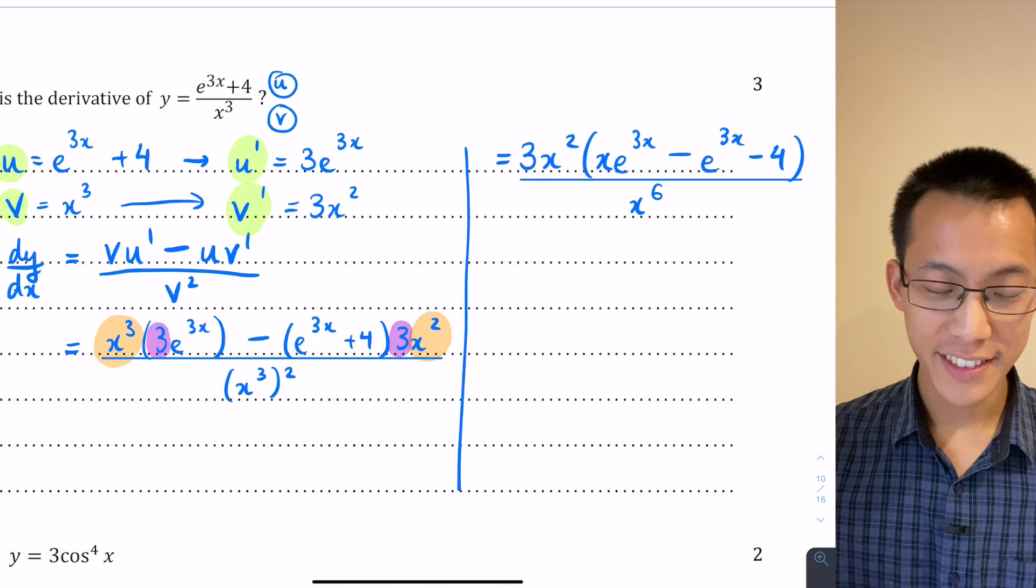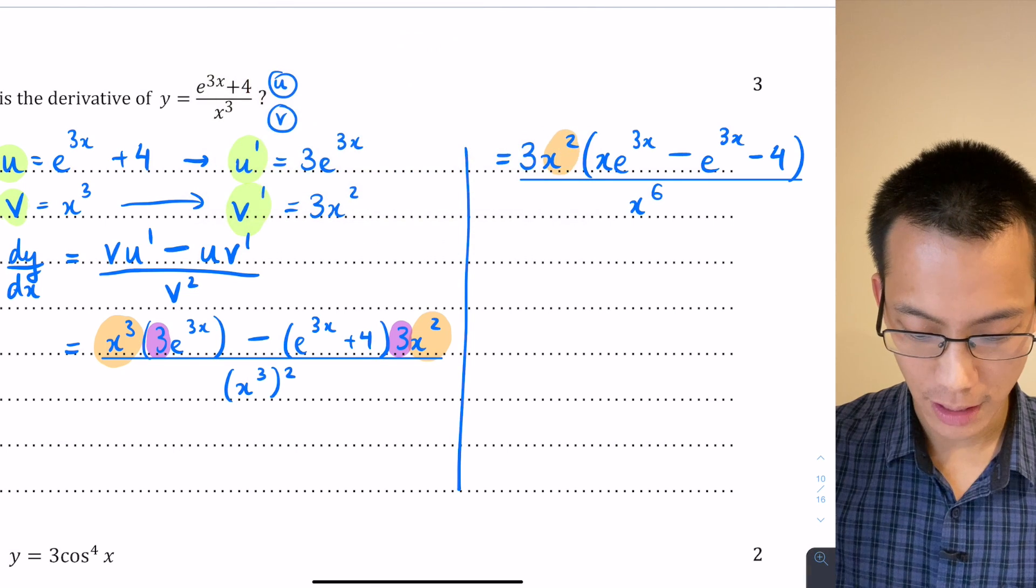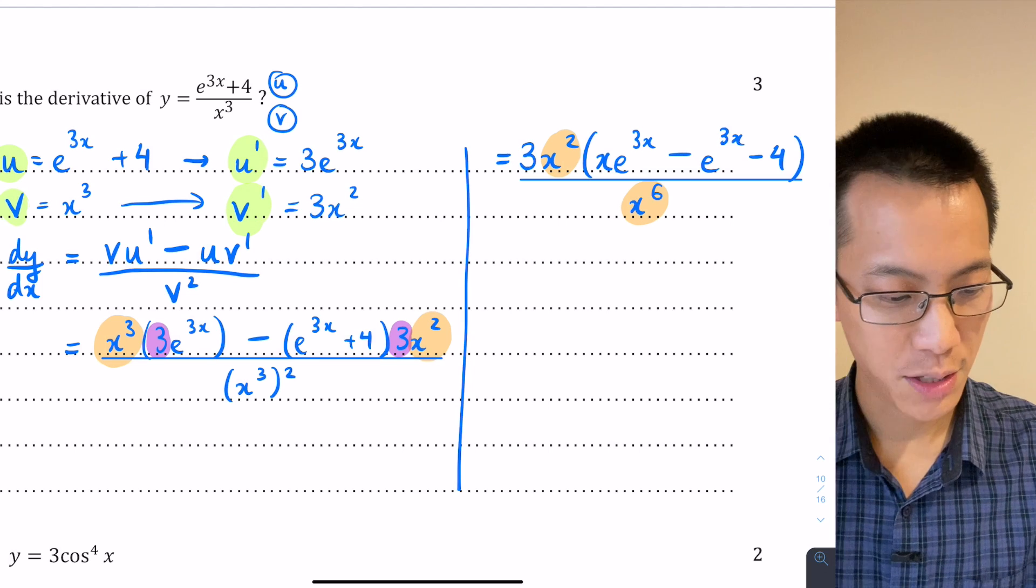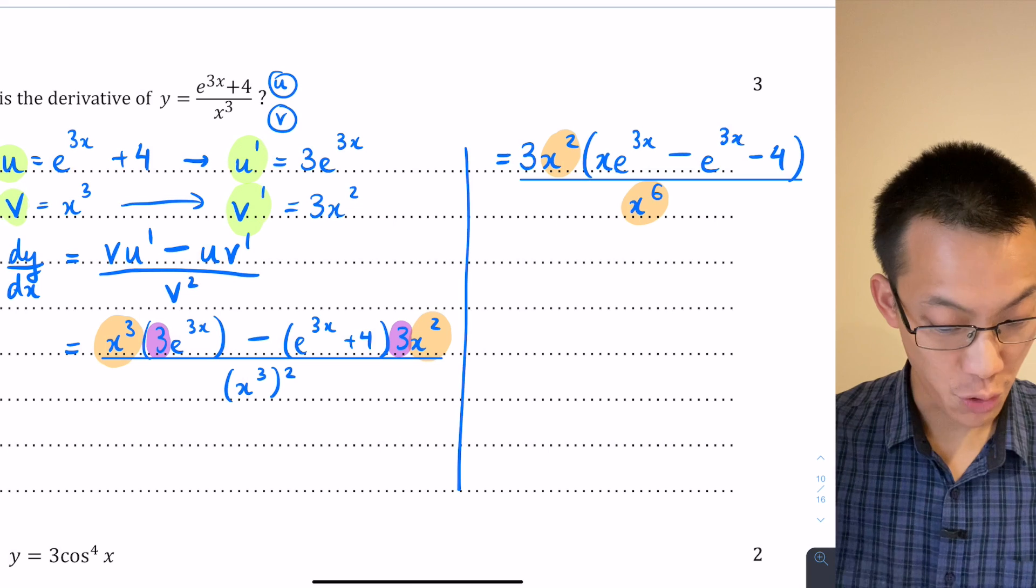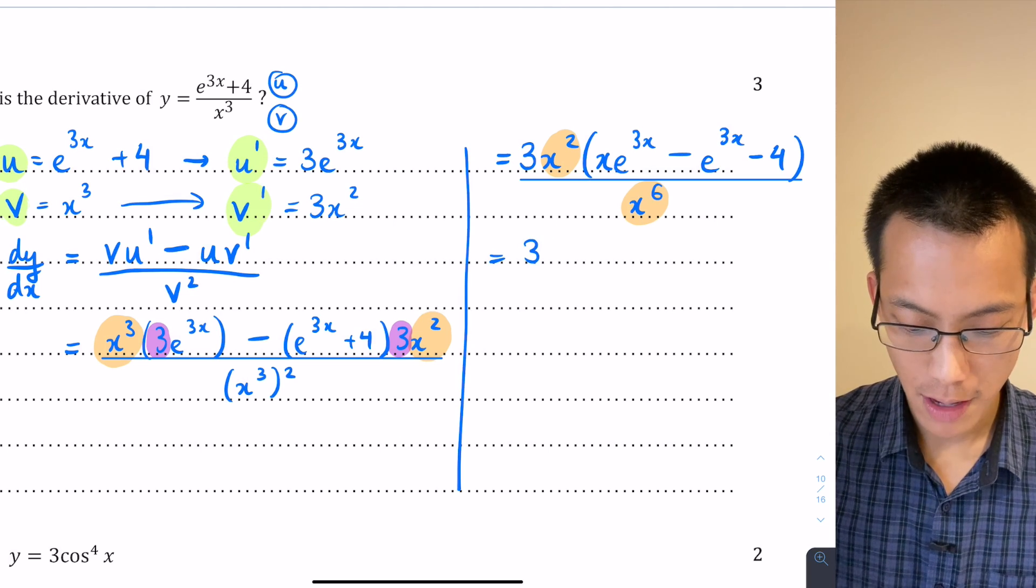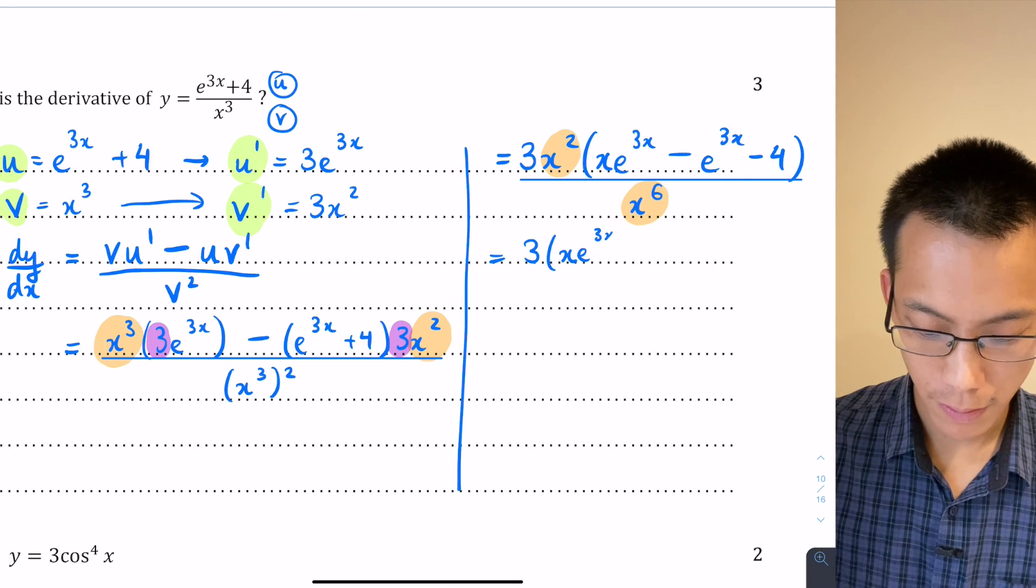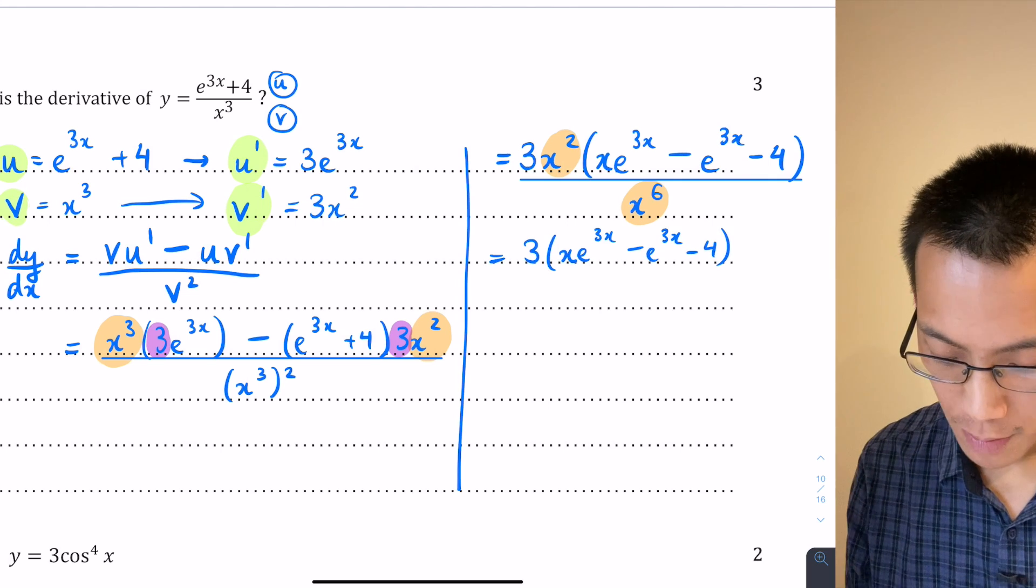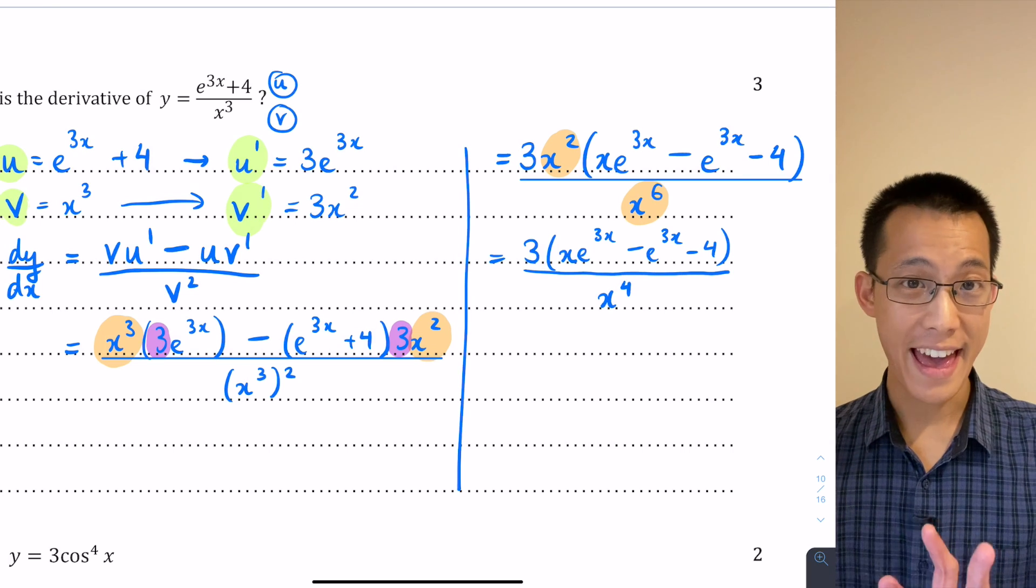This means I can simplify a little bit further. I can do some cancelling here. x squared there and there's an x to the 6 on my denominator. So what that means is I can cancel out two x's. So that gives me the 3 still on the top. Nothing inside my brackets is a like term. So I'll just write it as it was before, 3x minus 4. On the denominator, because I've divided through by x squared, that leaves me with x to the 4, and I'm finished.